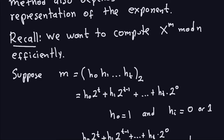Assuming that m is my exponent and it has a binary representation where the h's here are 0s and 1s, and h0 is always a 1 — because if it is not, you just ignore it. This next line is just expressing the binary representation: you have h0 times 2 to the t power, plus h1 times 2 to the t minus 1, and so on.